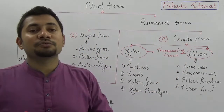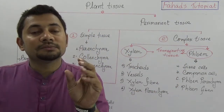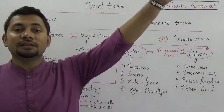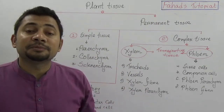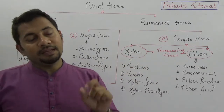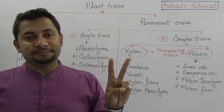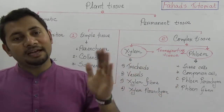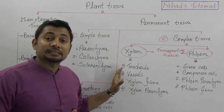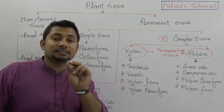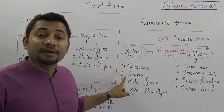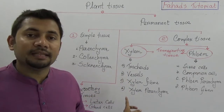The vascular bundle system — these tissues are responsible for transporting foods and minerals from the ground to the leaf and from the leaf to the ground, through the help of xylem and phloem. In xylem there are two types: primary and secondary, and then we have meta xylem and proto xylem. There are four types of cells in xylem: tracheids, vessels, xylem fiber, and xylem parenchyma.